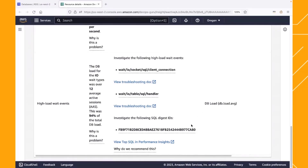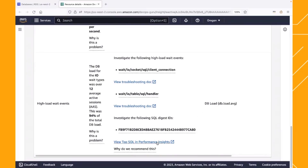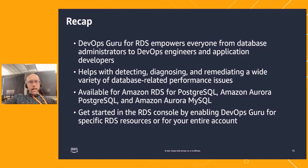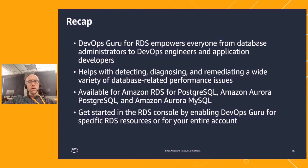Hopefully this information is enough to help you figure out what's going on. You should add a connection pool. You should figure out why this query is so expensive and why it's being run so many more times than usual. If you want to do your own investigation within Performance Insights, you can click through this link and that will take you back to the RDS console. So just to recap the presentation, we built this tool to empower everyone from database administrators to DevOps engineers and application developers to debug performance problems and resolve them as quickly as possible.